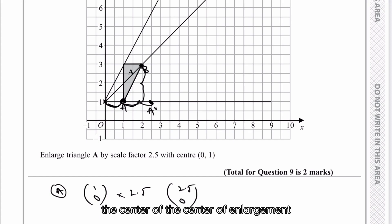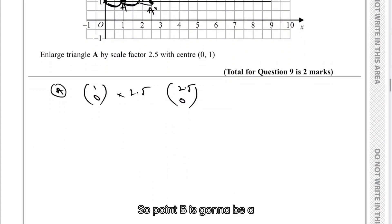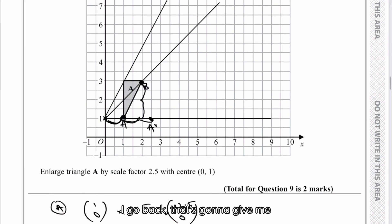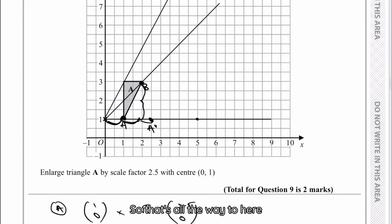Remember it's always from the center of enlargement, which in this case is going to be (0,1). So point B is going to be a vector of (2,2). I'm going to multiply that by two and a half, so therefore now that's going to be a vector of (5,5). If I go back, that's going to give me five jumps along, so that's all the way to here, and then it's five jumps upwards, all the way to there. That's going to give me point B.